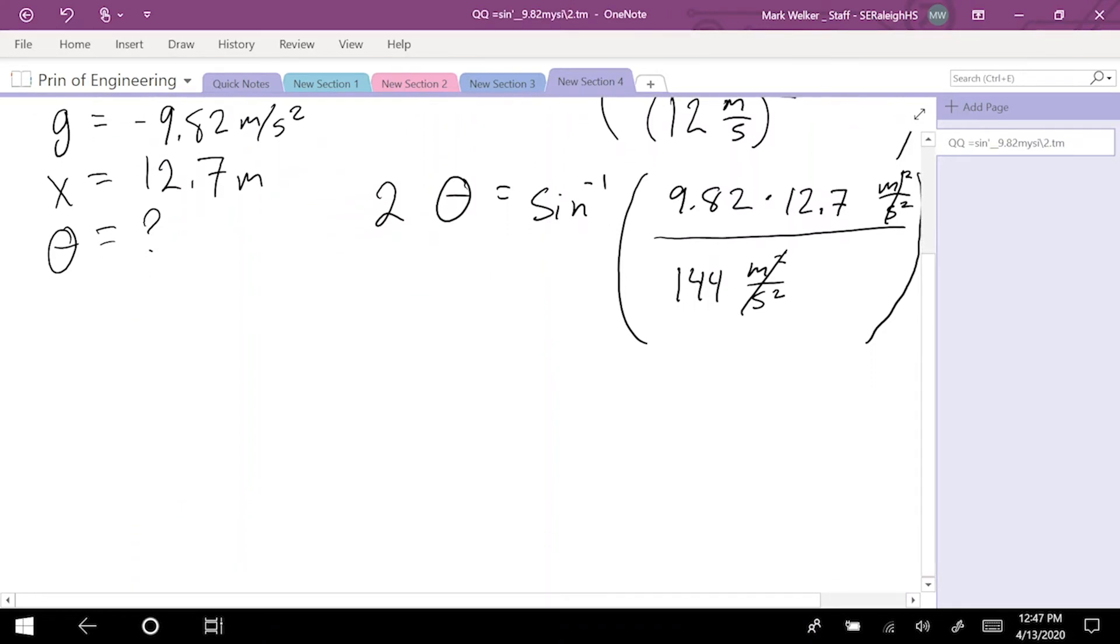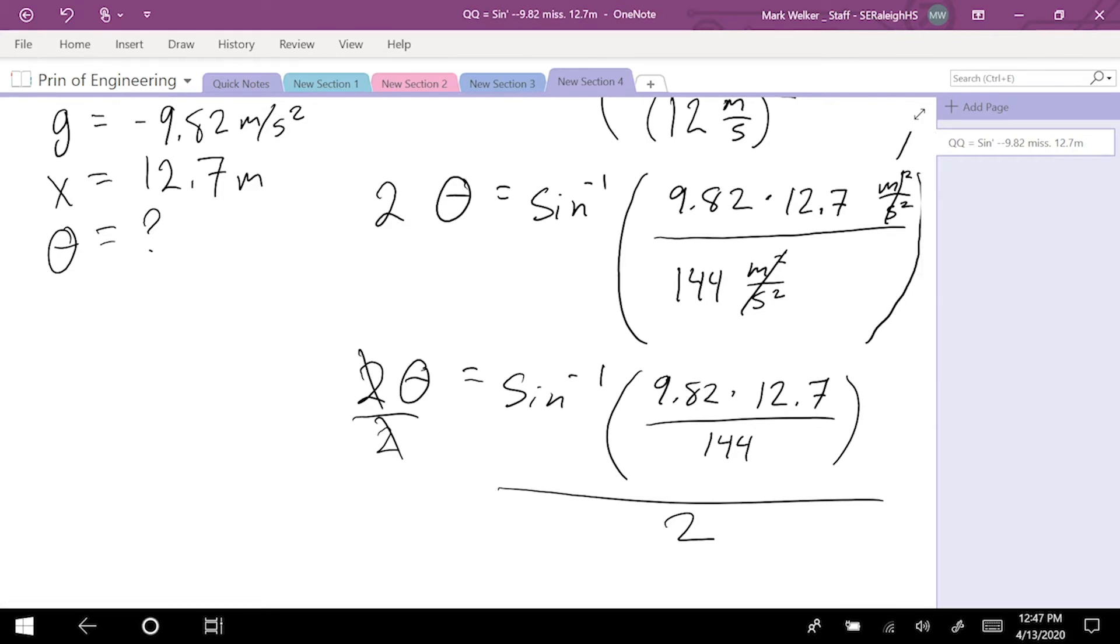Which means when we're getting it into the calculator, 2 times theta equals sine negative 1 of 9.82 times 12.7 over 144. And if you really want to, you could divide both sides by 2. So, we'll see about doing that. The 2's cancel out, and we're left with basically theta equals sine negative 1, the arc sine, of all our values divided by 2.